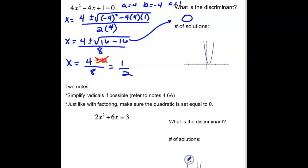Looking at the graph, here's your tick mark for 1 — we are hitting the x-axis at 1 half. Your answer should match your x-intercept in your graph. Notice that the parabola is just touching the x-axis and turning back around, so we get one real solution.